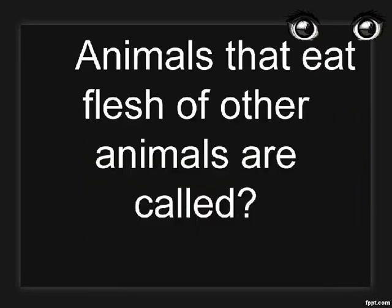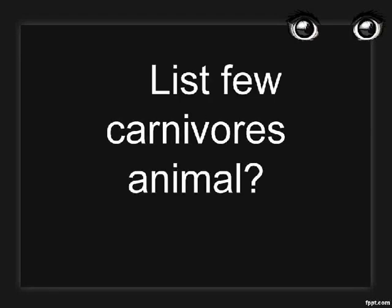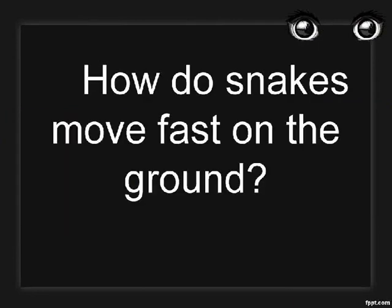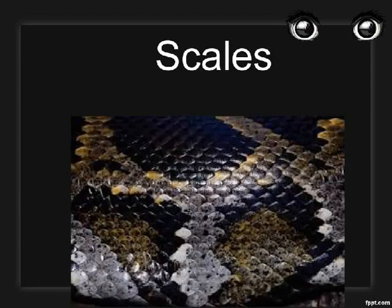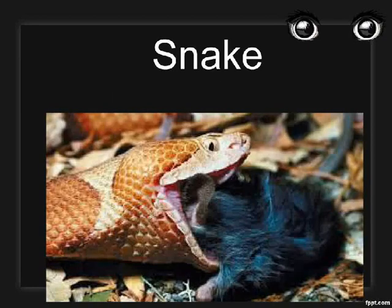Animals that eat the flesh of other animals are called carnivores. List a few carnivorous animals: tiger, lion, and foxes. How do snakes move fast on the ground? Scales. Which animal swallows its prey whole? Snakes.